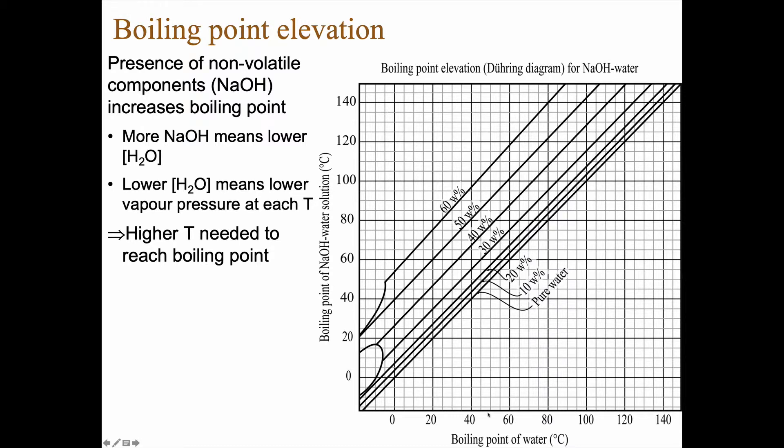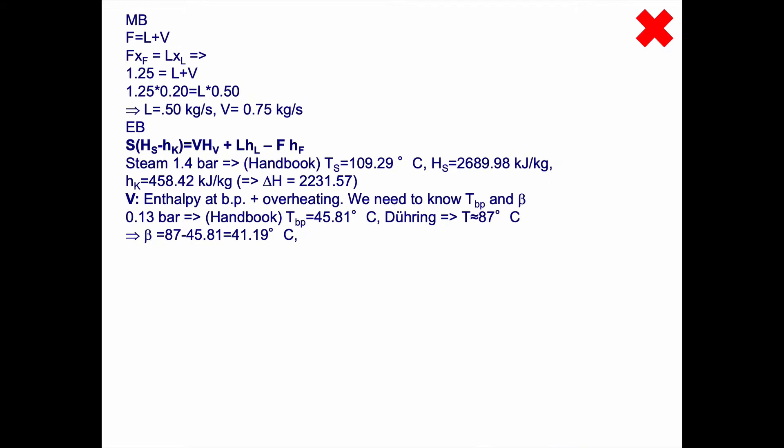If you take the handbook, you see the boiling point is 45.81, and then we have to go to the Dühring diagram. So 45.81 is somewhere between 40 and 50. We follow the 45 line and come up to 50%, slightly to the right of the vertical line. That's between 80 and 100, so the gray line is 85. We have slightly more than 85, perhaps 87. That means our boiling point elevation is 87 minus 45.81, so that's 41.19 degrees Celsius.